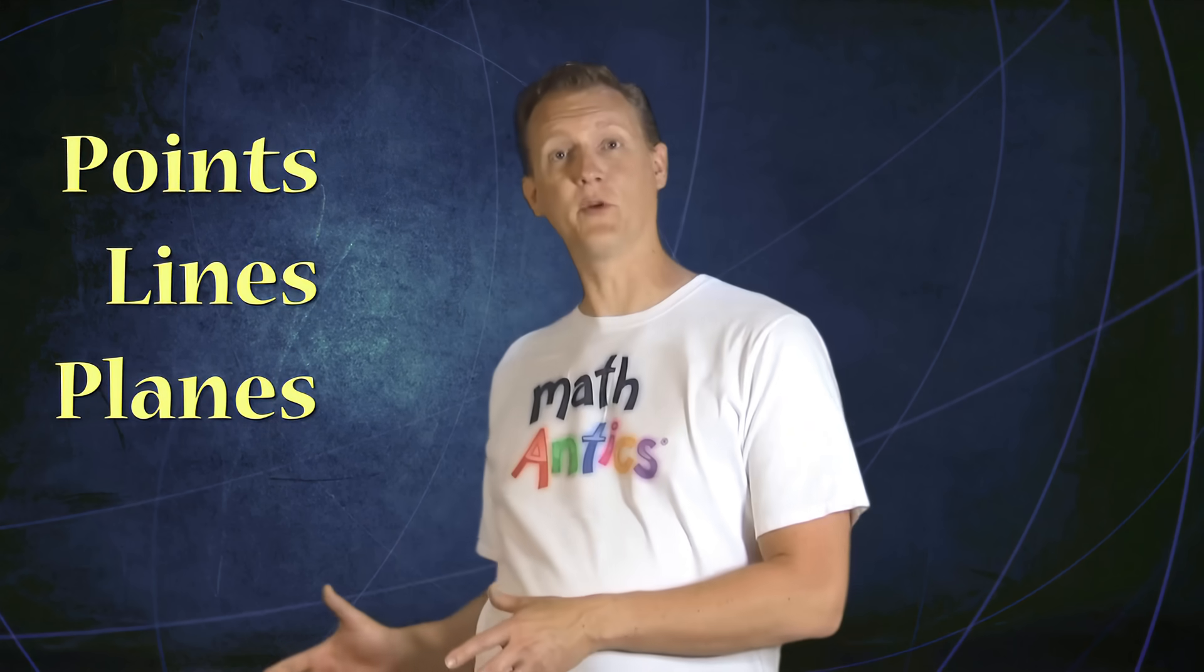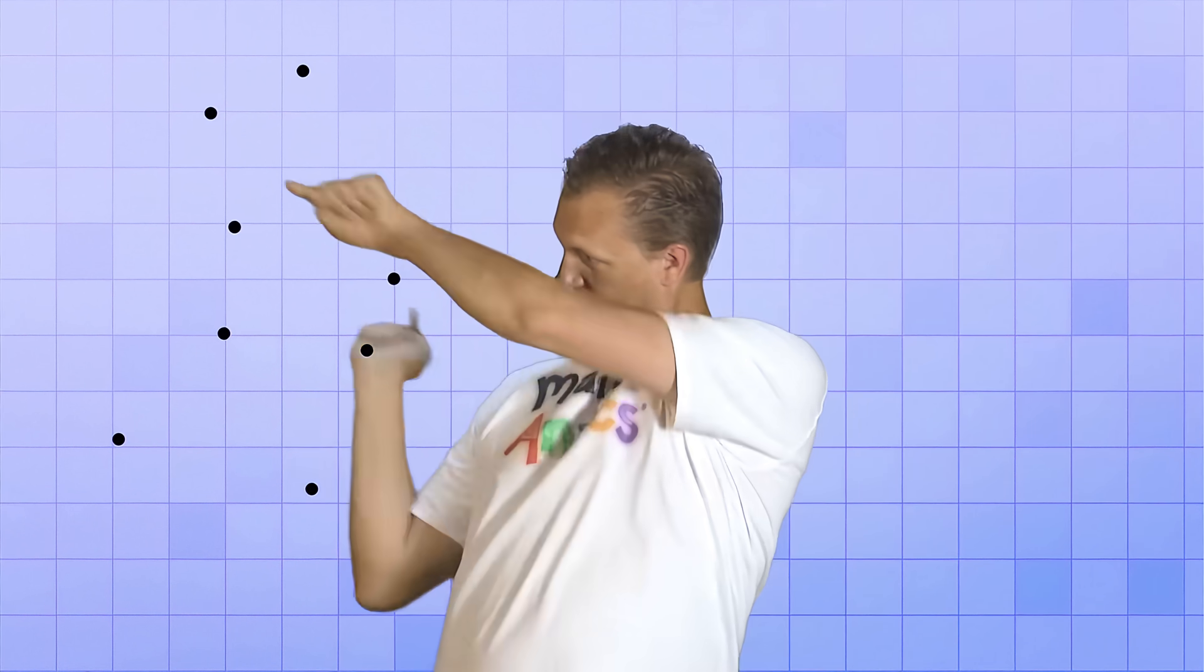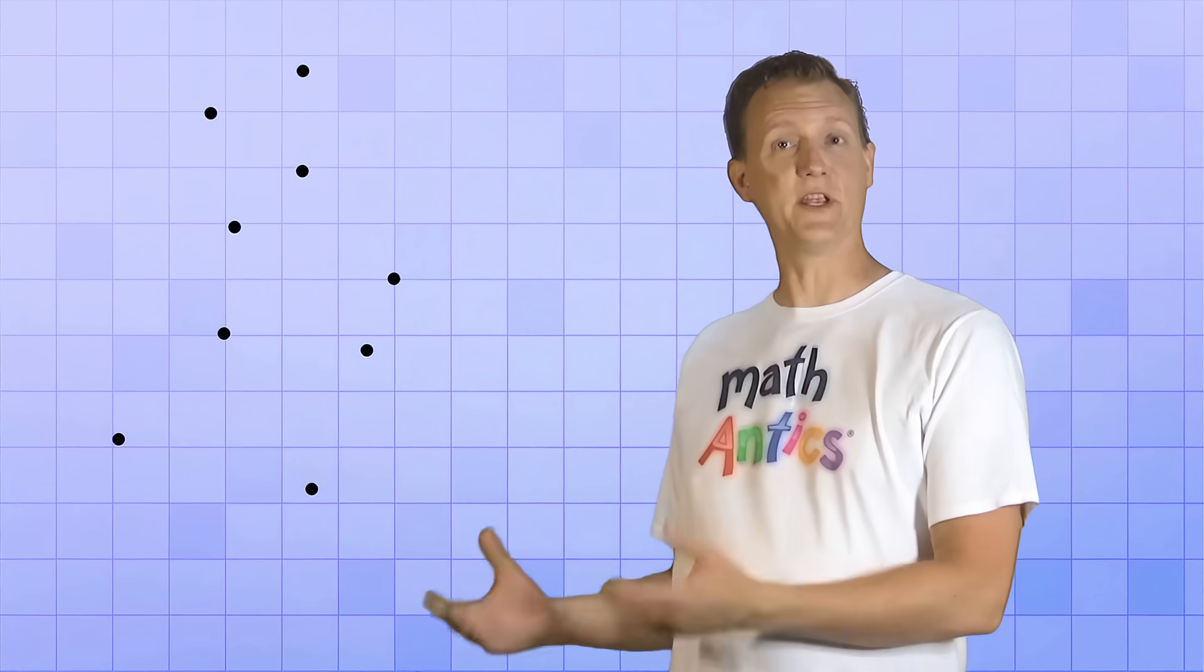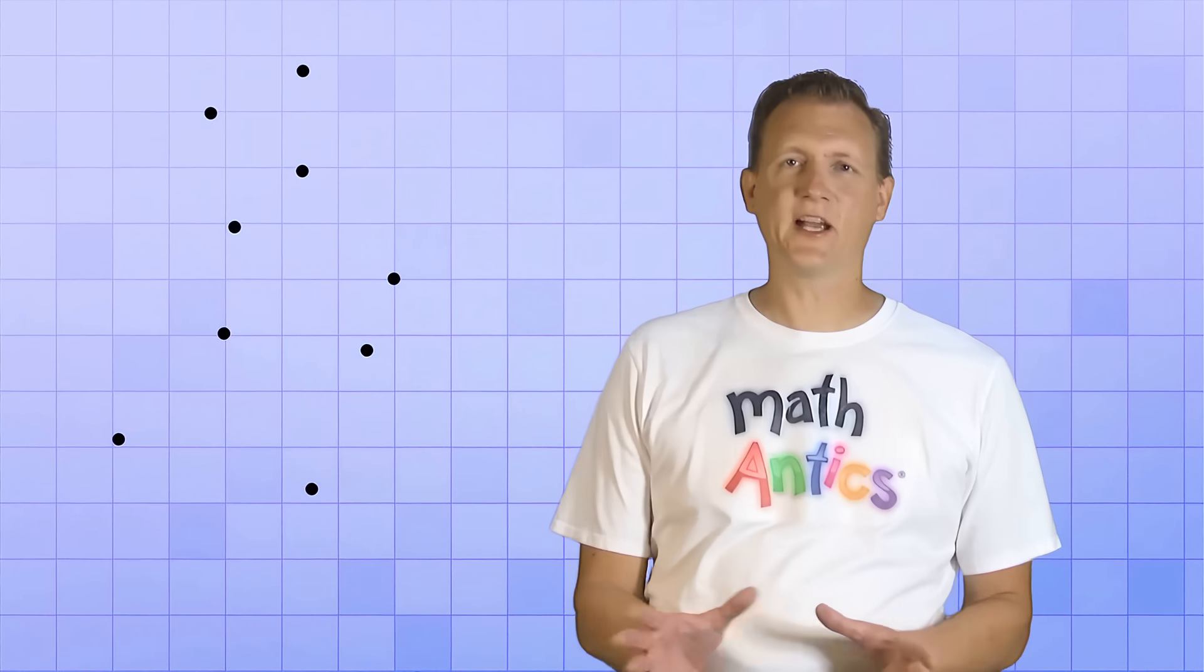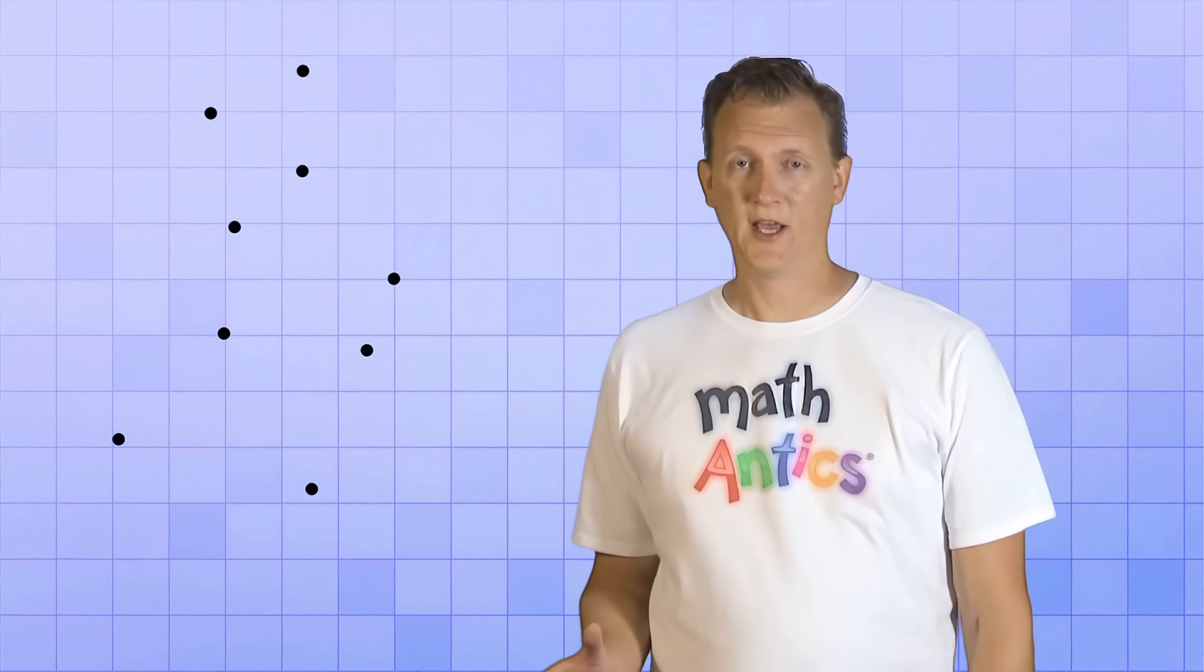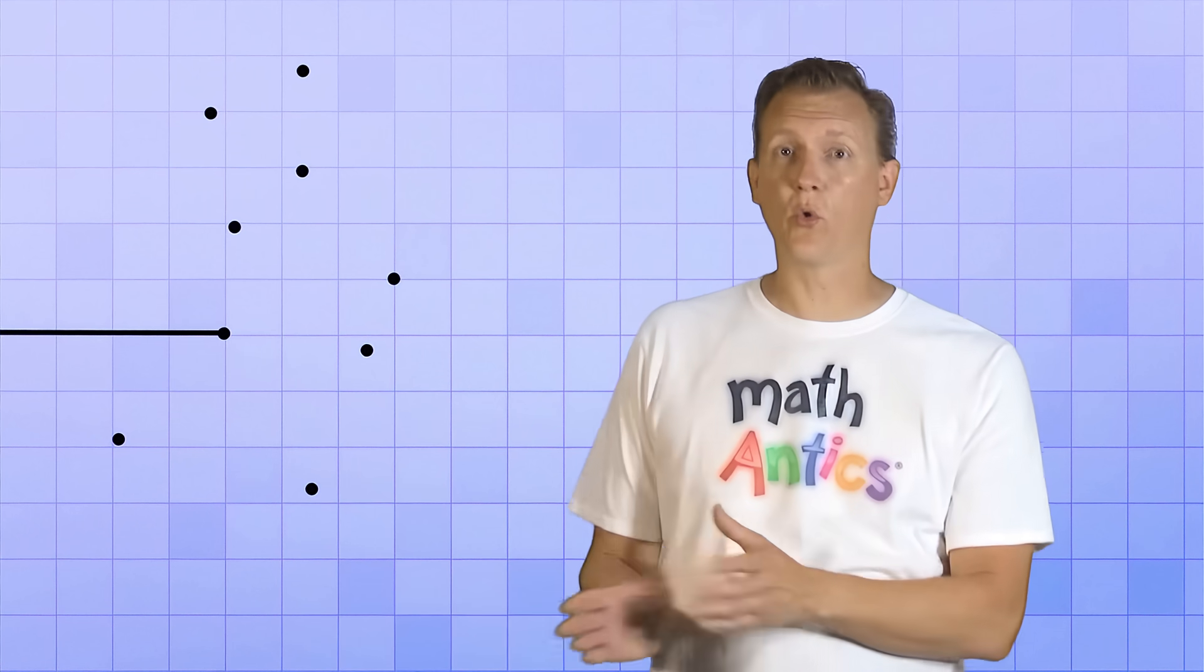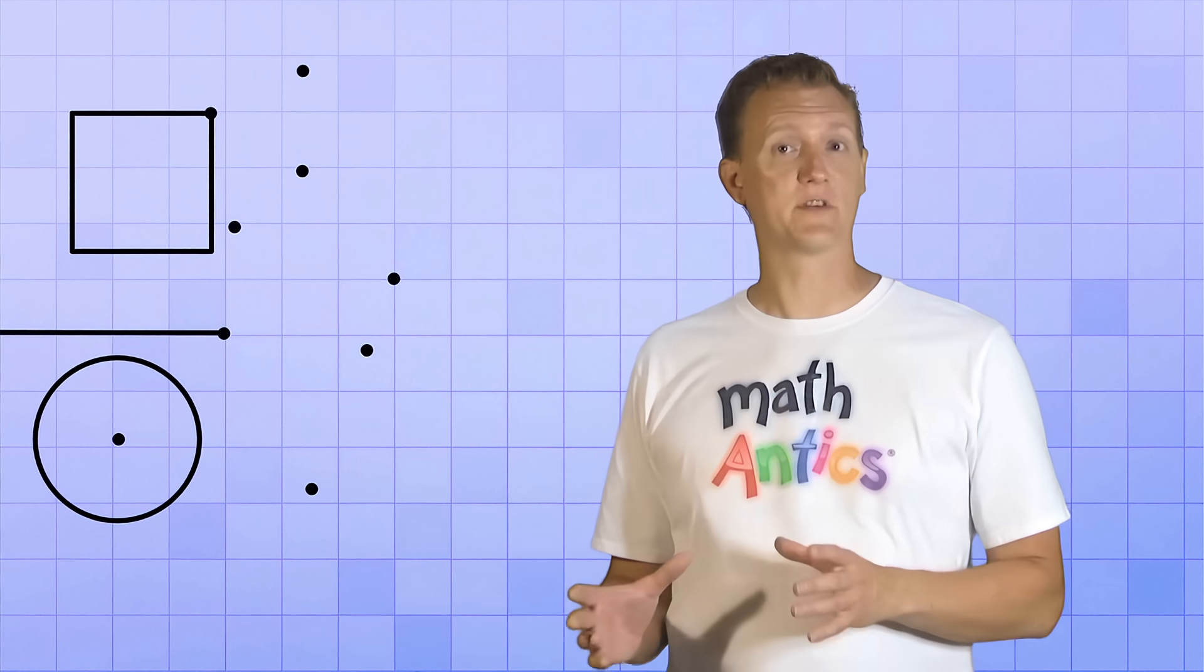We're going to start with points because they're about the simplest thing you can imagine in geometry. What's a point? Well, let me draw some for you. So these are points. They're just little tiny dots in space, but they do a really important job in geometry. They help us describe specific locations in space, like the end of a line, or the corner of a square, or the center of a circle.